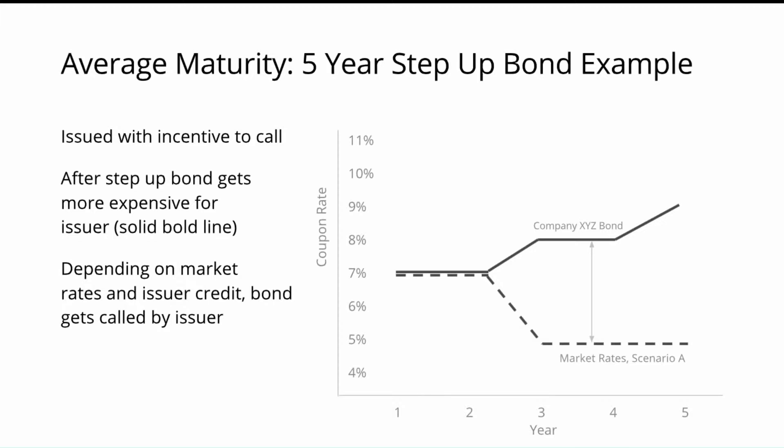What we have here is a chart with a company XYZ bond. We'll describe how such an early redemption option — a call option through a step-up — works. A step-up is an incentive for the issuer to redeem a bond early. The bond here was issued with a 7% coupon rate by company XYZ.